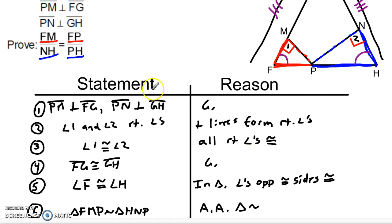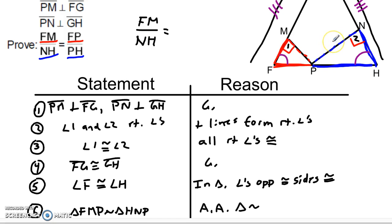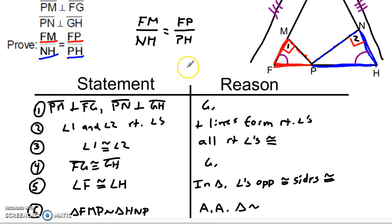Now all we have left to do is write that proportion. In this case they gave you the proportion, but let's go through how to set it up. You begin with any one of those four pieces, say FM. FM is in the red triangle. Look at who FM corresponds with in the blue triangle — notice the placement of FM: it is in between the right angle and the one-tick angle. So in between the right angle and the one-tick angle in the blue triangle, I find segment NH. That means FM corresponds with NH. When I write that as a ratio, that's a ratio of corresponding sides in these two triangles. Since the ratio of corresponding sides in similar triangles is always the same, that is equivalent to the ratio of FP — another side in the red triangle — over the side that FP corresponds with. One-tick to the no-tick: that's PH. And there you have the proportion.